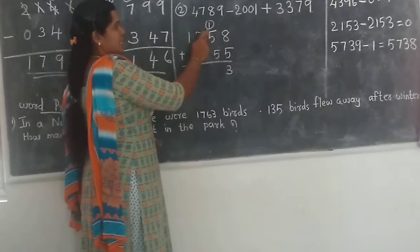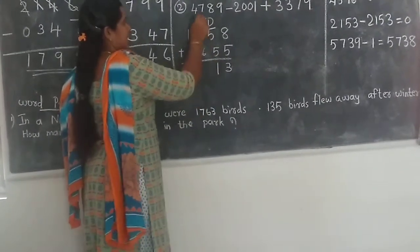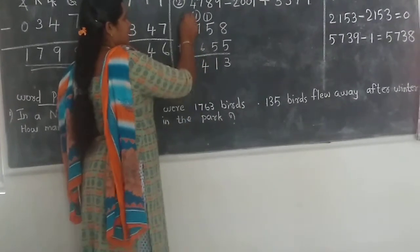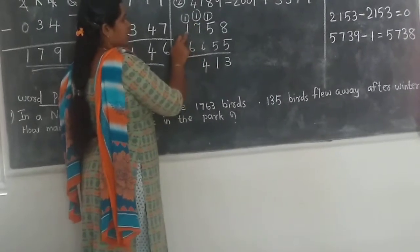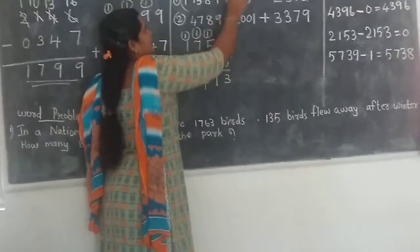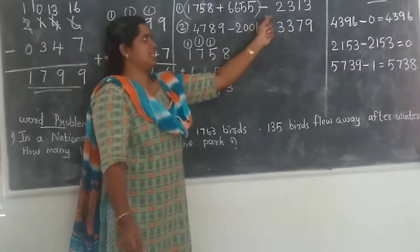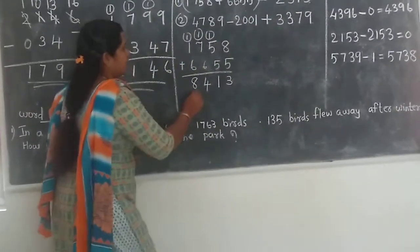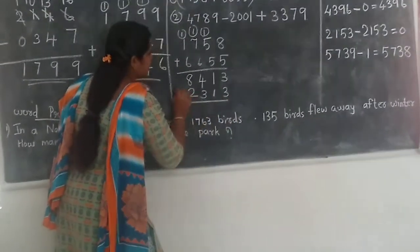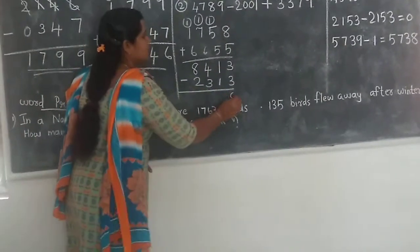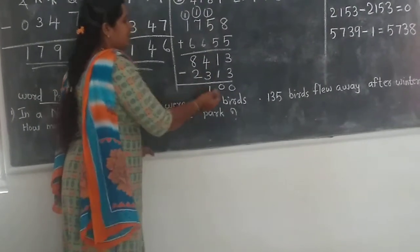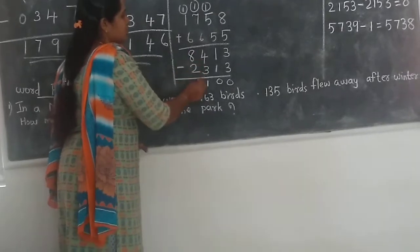Continuing: 7 plus 1 is 8, and 8 plus 6 is 14. Write 4, carry 1. Then 6 plus 1 is 7, and 7 plus 1 is 8. So we get the answer. The subtraction gives us 2330. Checking: 3 minus 3 is 0, 1 minus 1 is 0, 4 minus 3 is 1, and 8 minus 2 is 6. This confirms our answer.